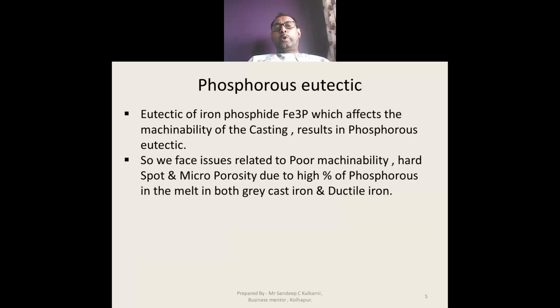The eutectic of iron phosphide, Fe3P, affects the machinability of the casting, resulting in phosphorus eutectic. We face issues related to poor machinability.